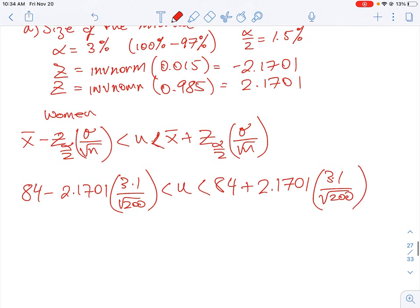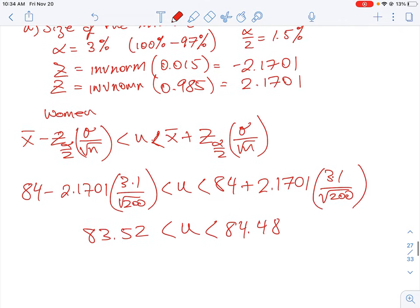All right, and then that will generate our interval. And if you work it all down on your calculator, you should get around 83.52 population mean and 84.48. That means within a 97% confidence interval, we can say that these are the ages. So this is longevity. So that women live with a 97% confidence interval to at least 83 and up to 84 and a half.